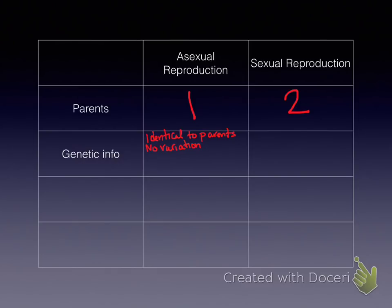For example, if a cell had blue eyes, when it went through asexual reproduction, it would still have blue eyes — there'd be no variation. If it had two chromosomes, it would still have two chromosomes. In sexual reproduction, it's basically the opposite: it has mixed genetic information. Think about you and your siblings — you don't look identical to them even though you came from the same parents, because there were two. If asexual reproduction had occurred, you would be identical copies.